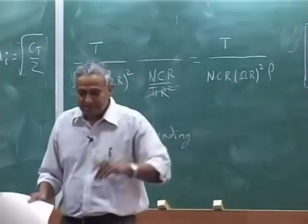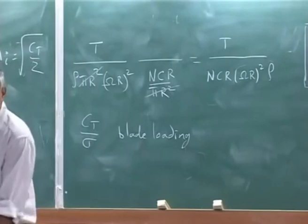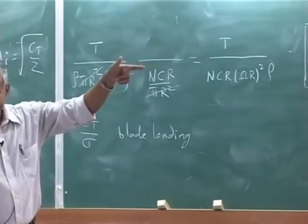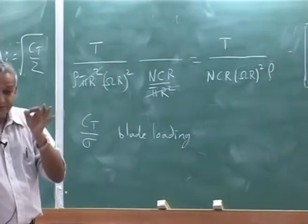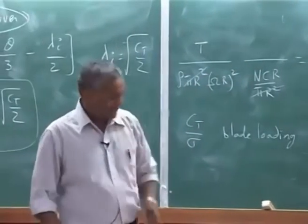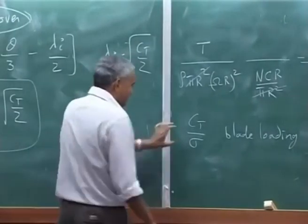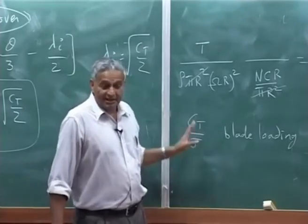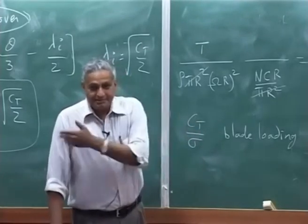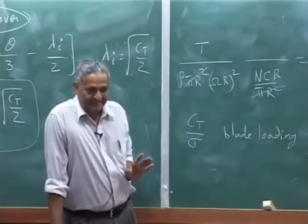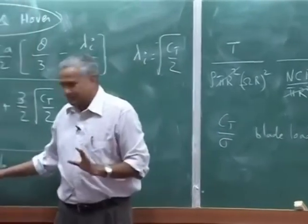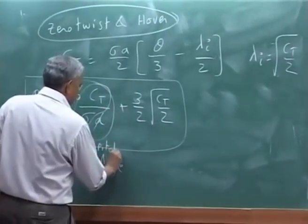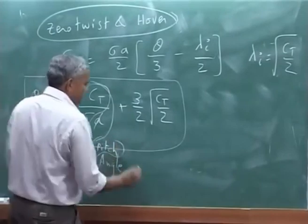So you see two non-dimensional parameters giving you the pitch angle of operation of the blade in hover. That is the critical thing. Now I want you to note down, because this particular quantity you may call it blade loading, you may call it just mean angle of attack, whatever it may be. Mean pitch angle would be better, mean pitch angle required for operation.